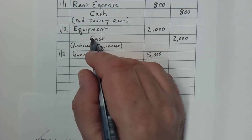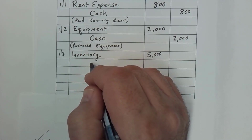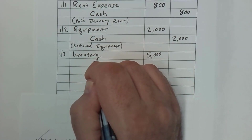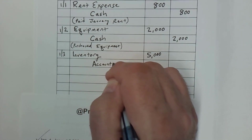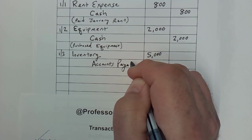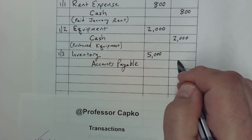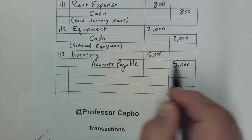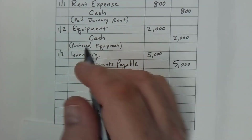we paid for it on credit, so I'm going to indent. And that's going to be a credit to accounts payable, and that's going to be for the same $5,000. And we can see our transaction balances.